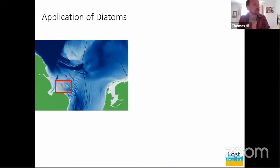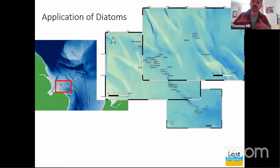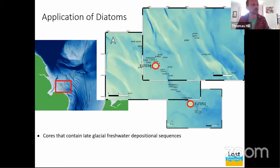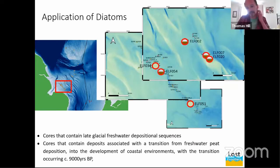So we've seen this diagram quite a few times already in terms of the location of many of these cores that were extracted as part of the project. And we are going to be focusing on a selection of cores within this area, Ben alluded to as well. And I'm going to try and provide a generalized summary of the results. There's been a lot of analysis that has been undertaken, but I'm just going to broadly divide them into two groups. First, I'm going to explain two cores that have been identified as having late glacial freshwater depositional sequences. And then I'm going to talk a little bit about some of the cores that have very valuable sequences that show a transition from peat deposition into the development of more established coastal environments, with the transition appearing to be relatively uniform across the area of around about 9,000 years BP.